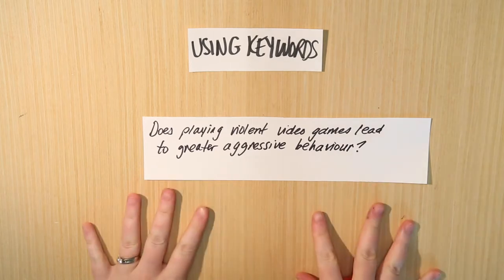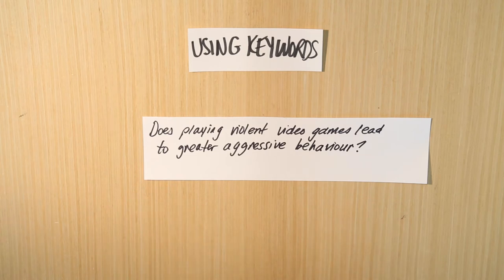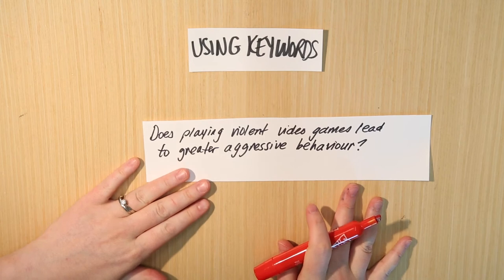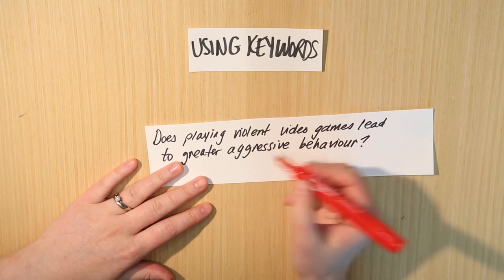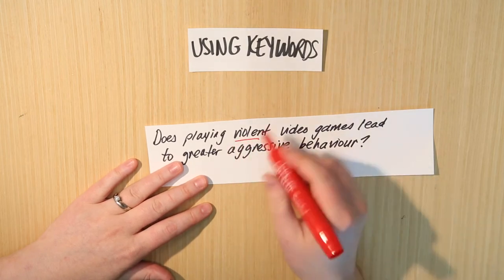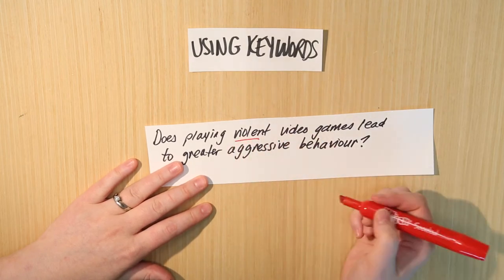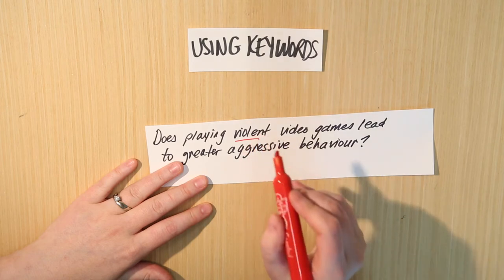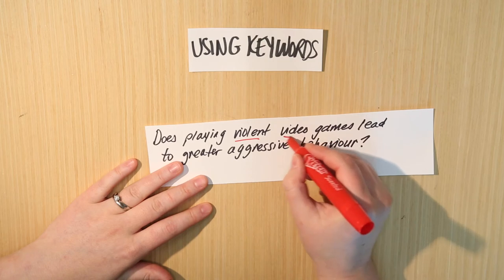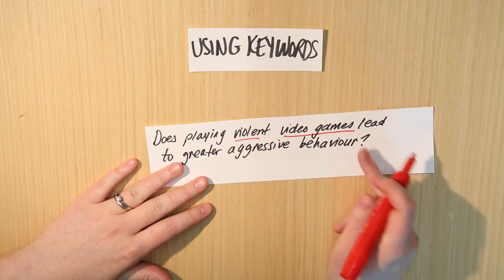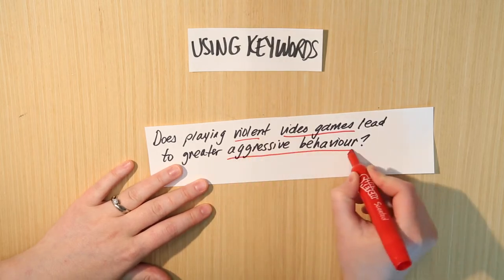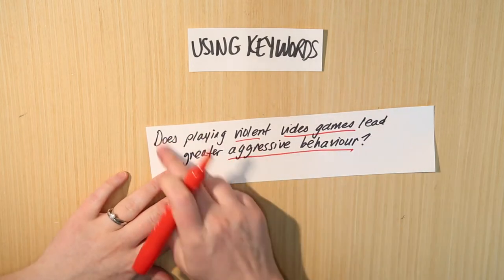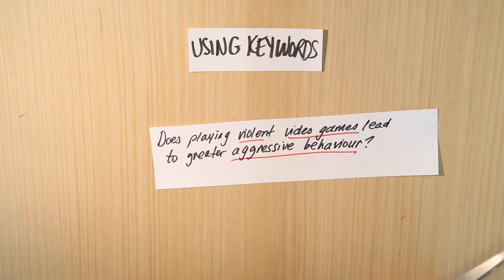If you were using Google, you could just type it in like that and get a whole bunch of websites and news articles. But when you're using a database, you actually can't do it that way — you can't type in an entire sentence. What you have to do is work with specific keywords, the ones that are the most important concepts. The rest of the words are basically just filler, and when we go to work in the database, we can't use them. We have to stick to the main concepts.